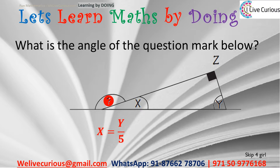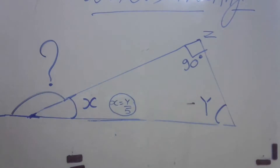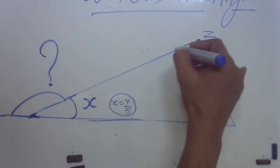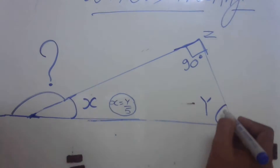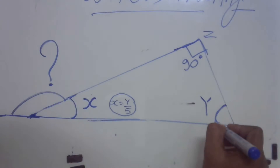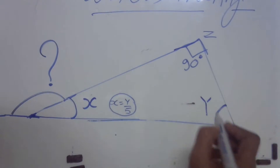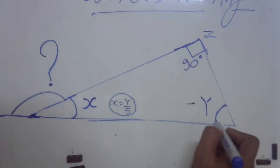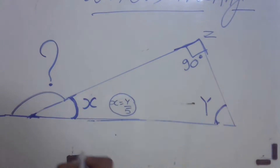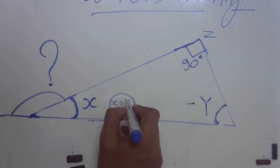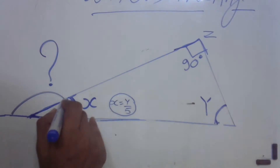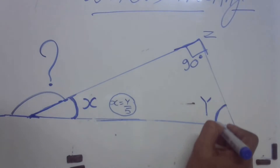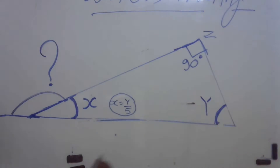Hello friends! Here we have a geometrical question — it is a triangle. This angle is 90 degrees, this angle is 90 degrees, and this angle we don't know. But we have an already known relationship between this angle and this angle: x is equal to one-fifth of y. So this angle, whatever it is, is one-fifth of the other angle.